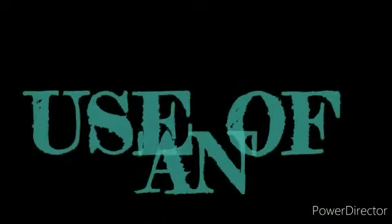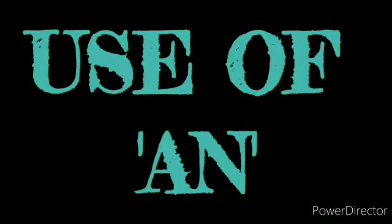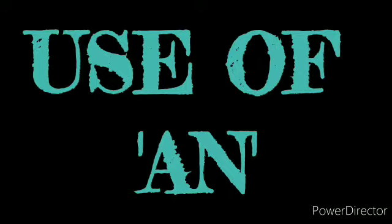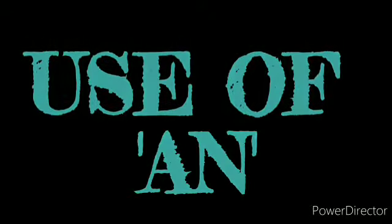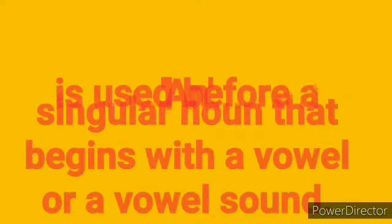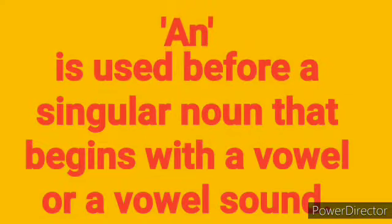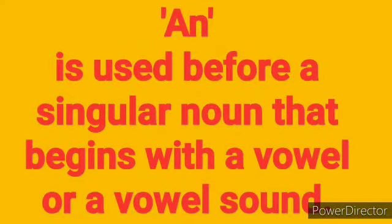Use of 'an'. Now we will know where 'an' is used. 'An' is used before singular noun that begins with a vowel or a vowel sound. How many vowels are in our English alphabet? Five. Which ones? A, E, I, O, U.